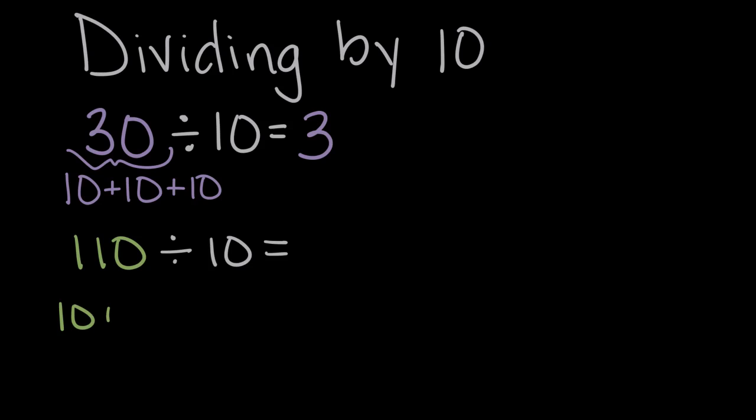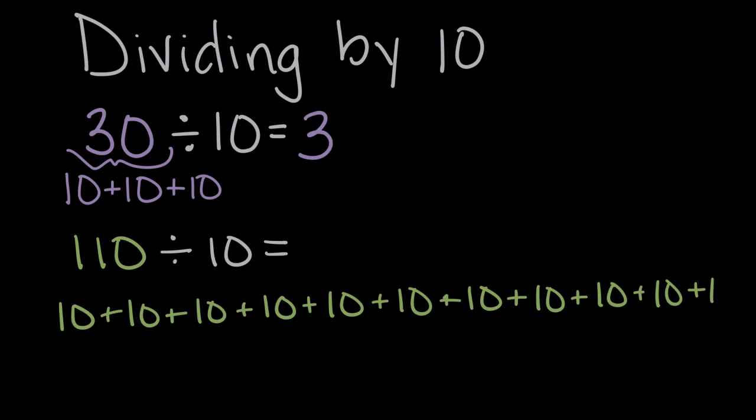There's one 10 plus another is 20, 30, 40, 50, another 10 gets us to 60, 70, 80, we're getting closer, 90, 100, and 110. So this right here is how many groups of 10 it takes us to get to 110.